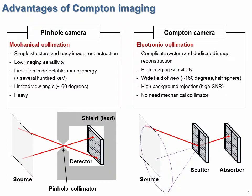Pinhole cameras are generally used for the same purpose. However, pinhole cameras use a mechanical collimator and therefore cannot be used to image high-energy gamma rays. On the other hand, Compton imaging filters effective events by electronic collimation, so it provides high accuracy and high efficiency for high-energy gamma rays.